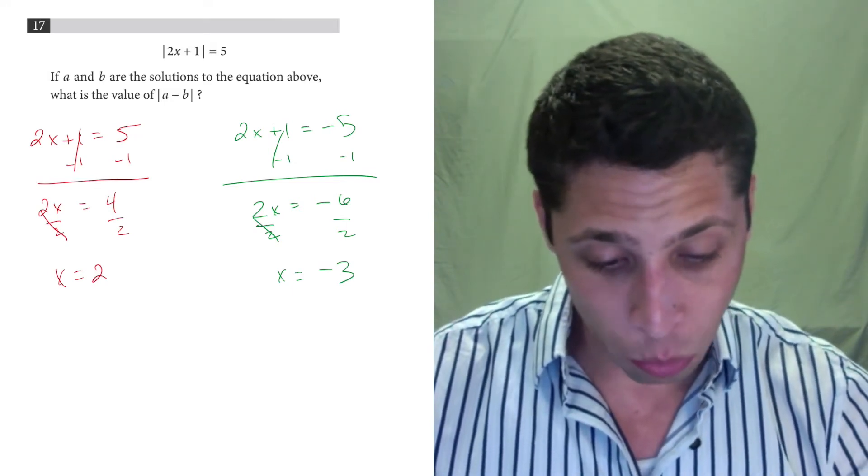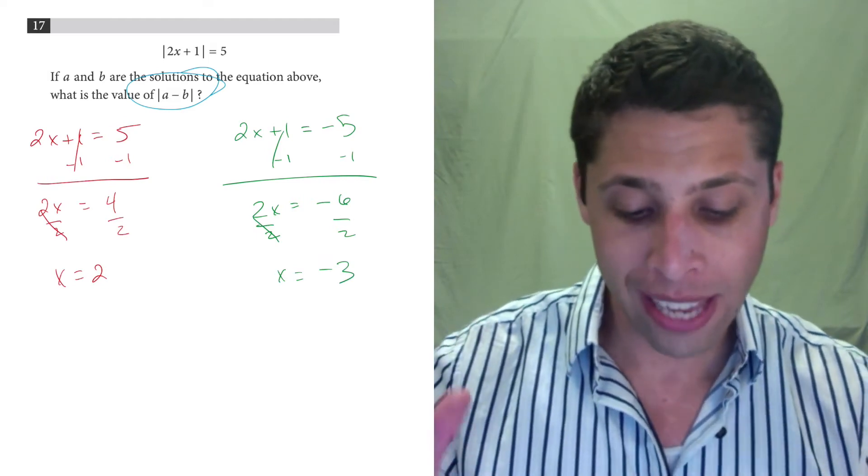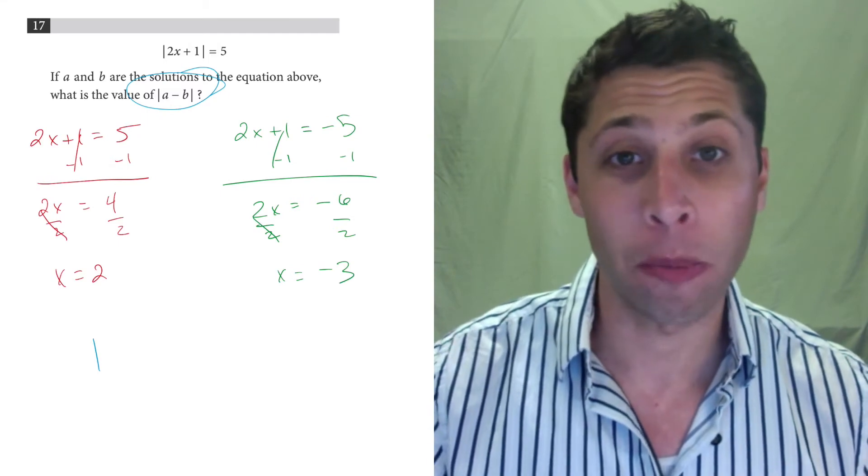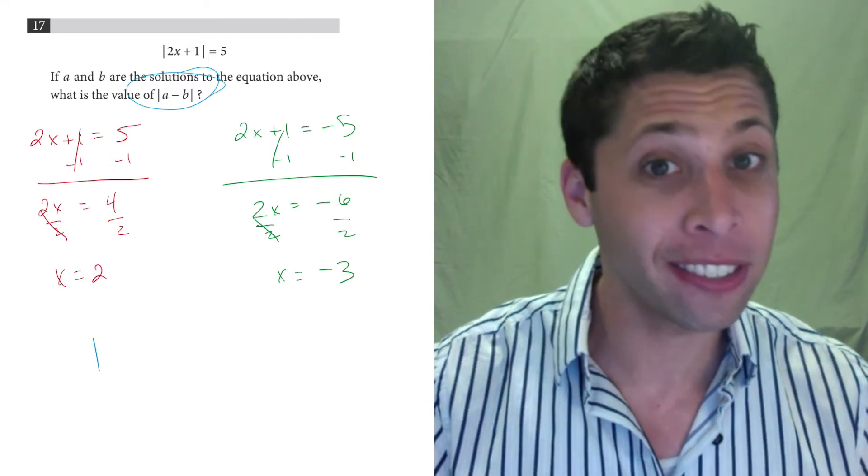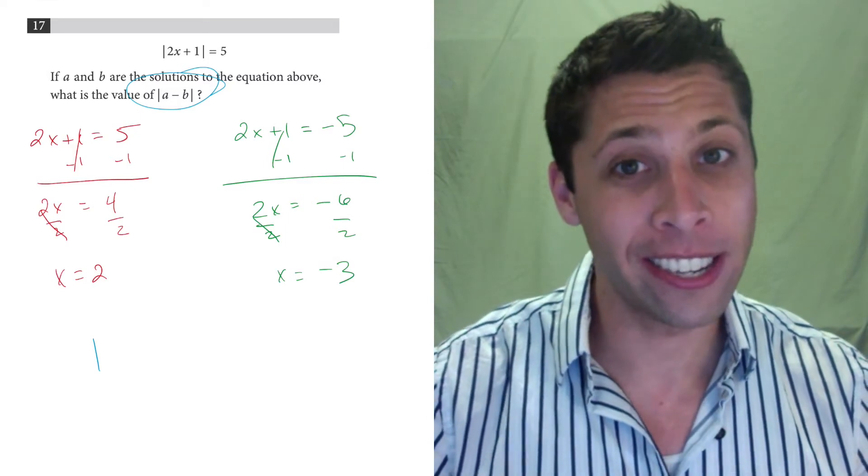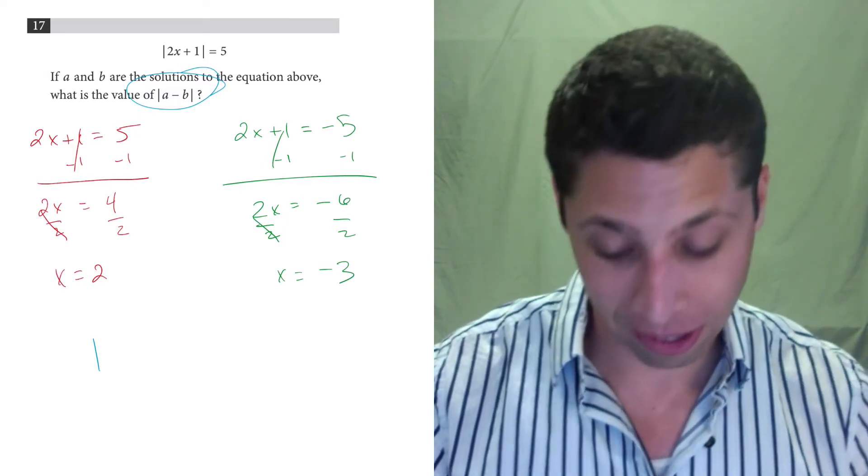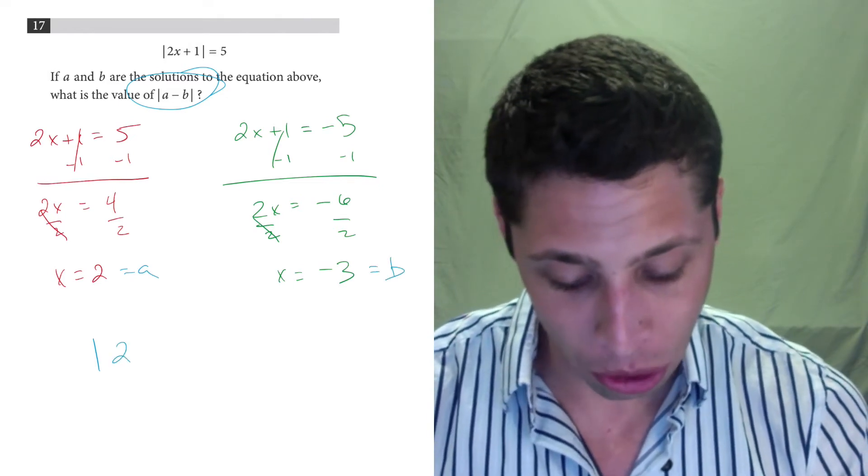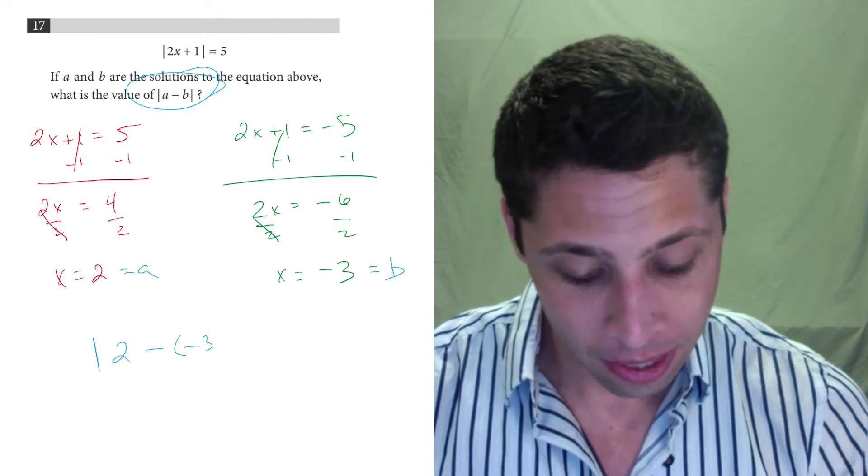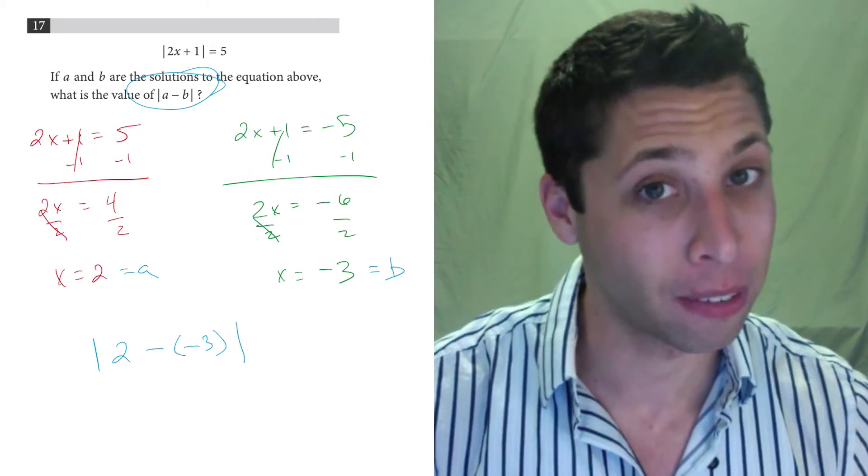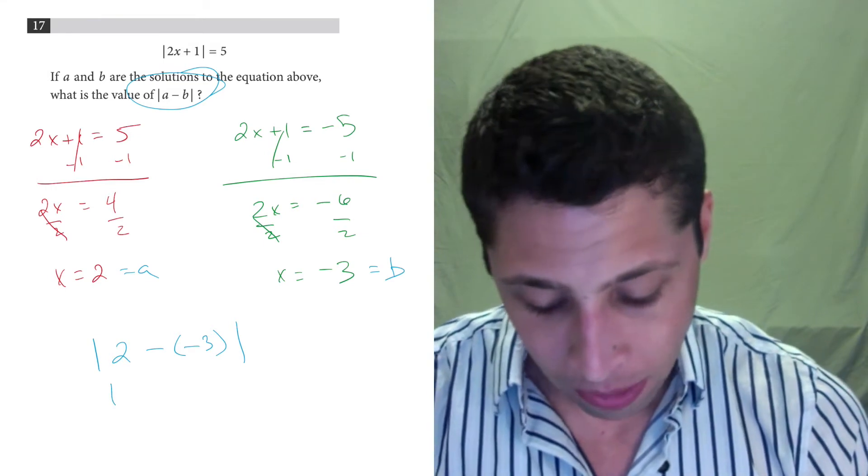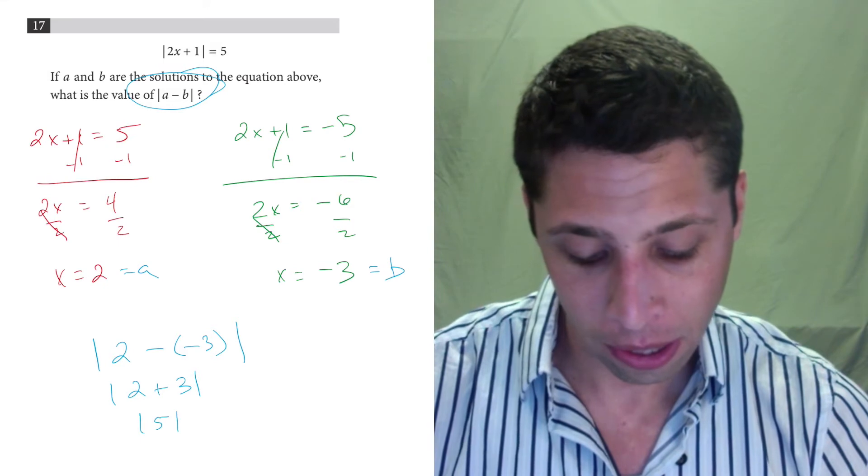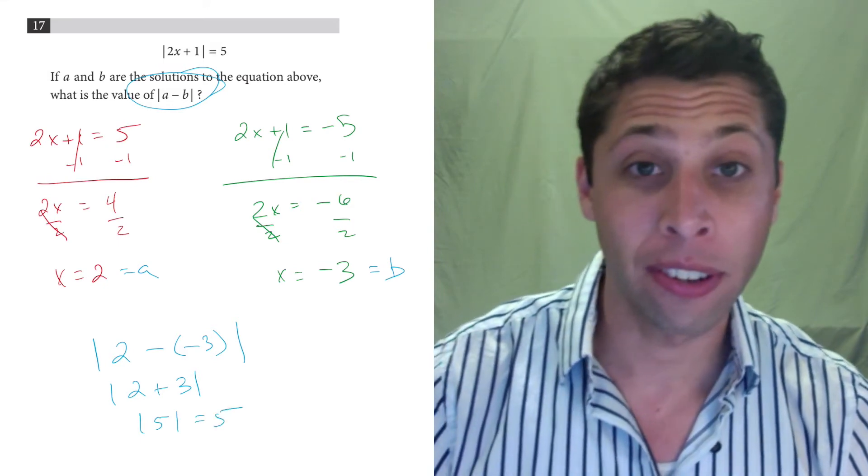In this case, they're giving us one last instruction here, which is to take the absolute value of A minus B. Well, which one is A? Which one is B? Doesn't matter. The fact that they didn't tell us is a good sign that it doesn't matter. Just do whichever you like. So let's do, this is A and this is B. That's going to be 2 minus negative 3. Notice how I put those parentheses around my negative 3. I don't want to lose that negative. This becomes 2 plus 3, which is 5, and the absolute value of 5 is 5.